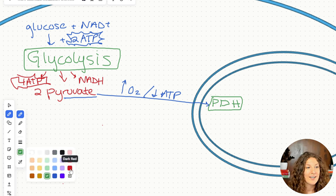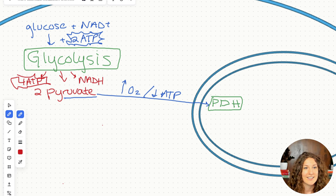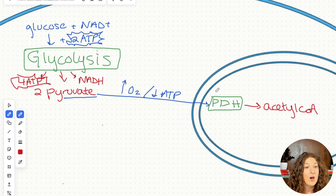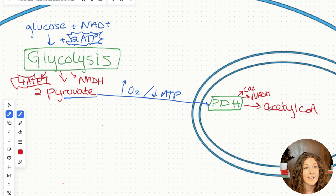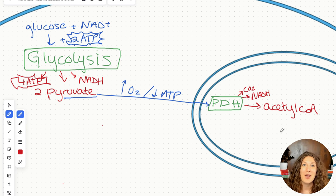Acetyl-CoA is our big molecule involved in our mitochondria. Pyruvate dehydrogenase also produces one molecule of NADH and one molecule of CO2. But our big one that we care about is acetyl-CoA, because that's what's going to move on to our next pathway.